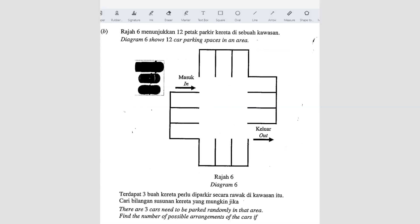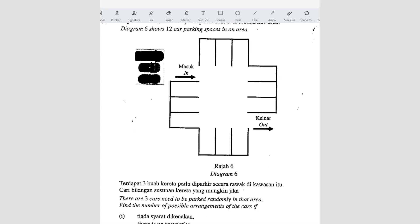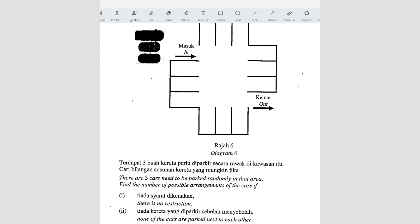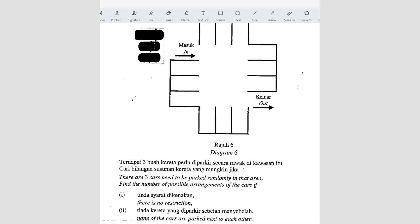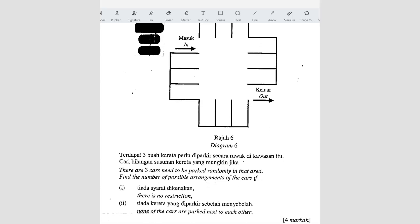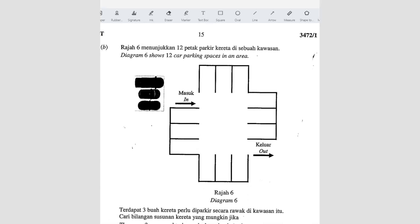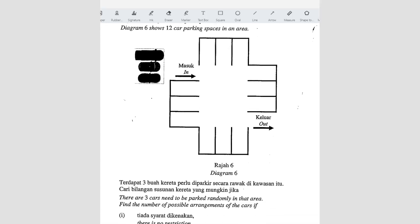Next. Diagram 6 shows 12 car parking spaces in an area. There are 3 cars needed to park randomly in that area. Find the number of possible arrangements of the cars if there is no restriction. So first of all, there are 3 different cars here, right? 3 different cars. So in other words, the arrangement will matter.